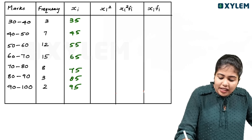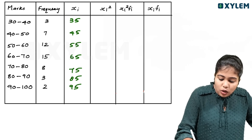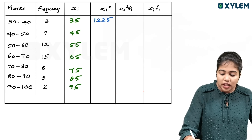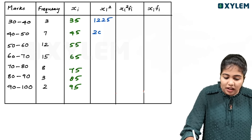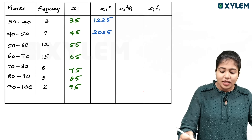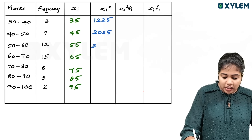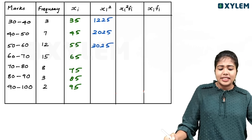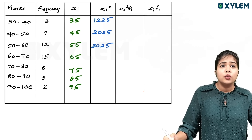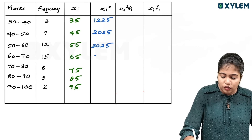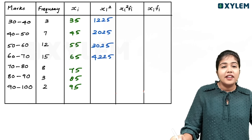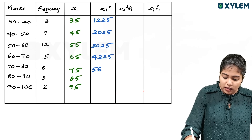You will have the 35th score giving 1225, and the 45th score is 2025. The 55th score is 3025. You will have the 65th score giving 4225, 75 giving 5625, 85 giving 7225, and 95 giving 9025.